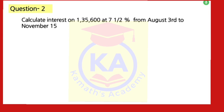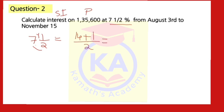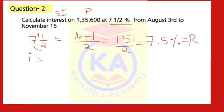Second question: Calculate the interest on Rs. 1,35,600 at 7.5% interest from August 3rd to November 15th. Here 1,35,600 is the principal amount. R = 7.5%, so I = 7.5 ÷ 100 = 0.075.